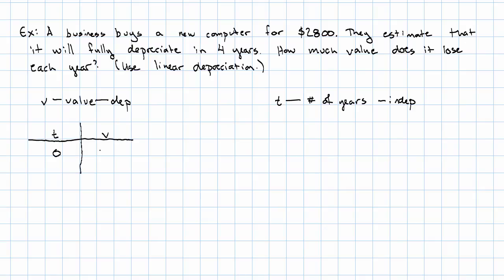When they've just bought the computer, its value is $2,800. Four years later, its value is zero. Since for this question, we're interested in the rate of change, that is, the slope, we want to calculate the slope here, which we can do without writing down the equation.